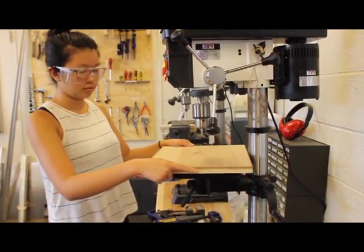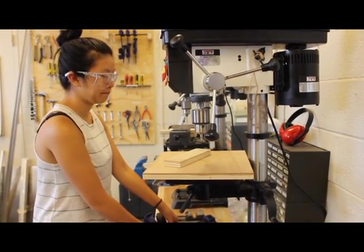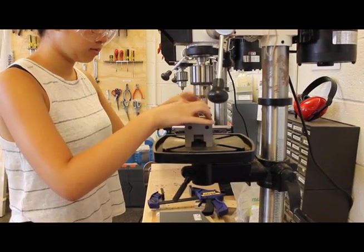We recommend placing a piece of sacrificial wood on the table. This piece of wood is helpful to prevent blowout in your part when you are drilling a through hole. If your part is small or circular, you must secure it in a vise.